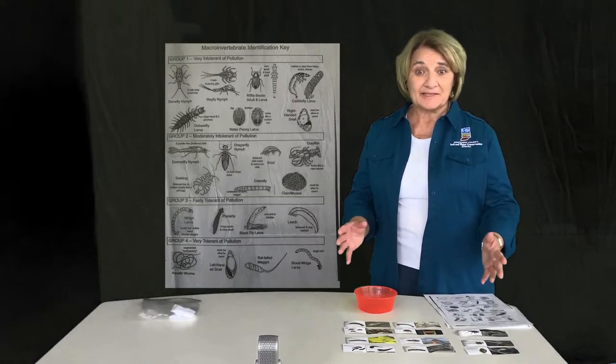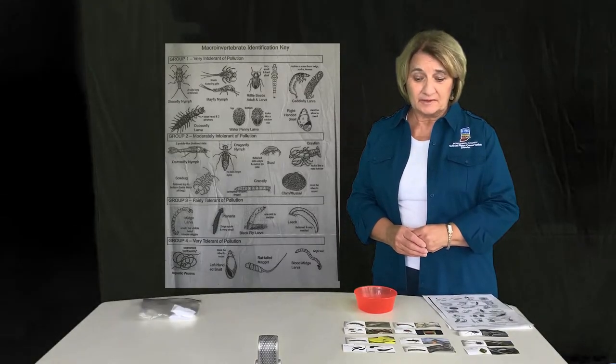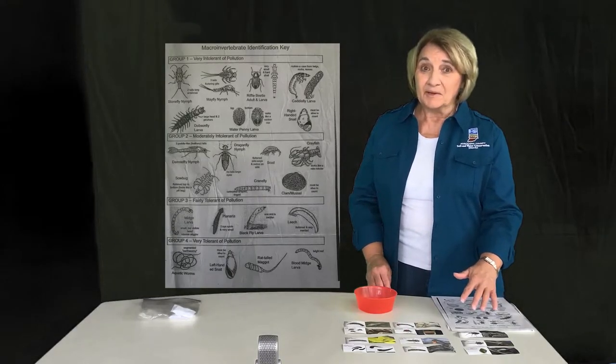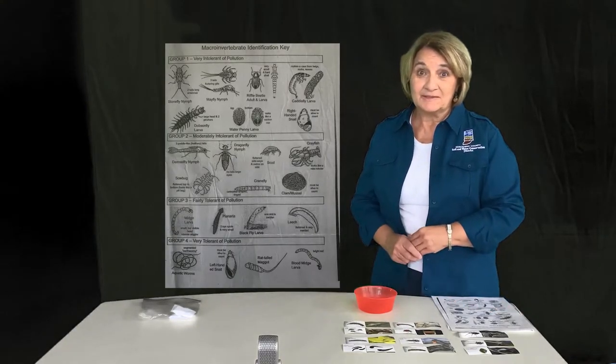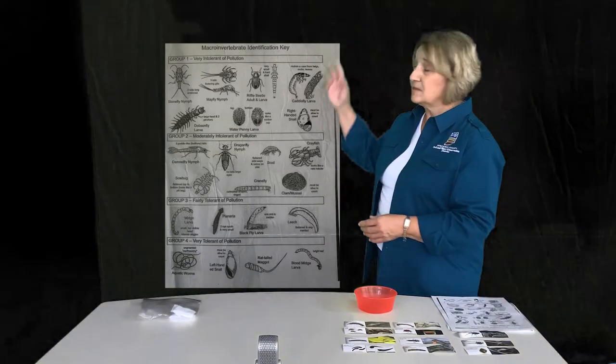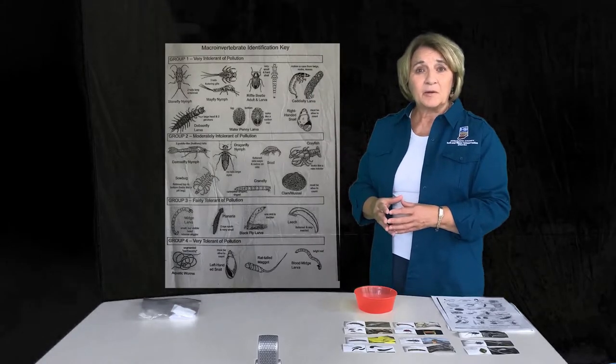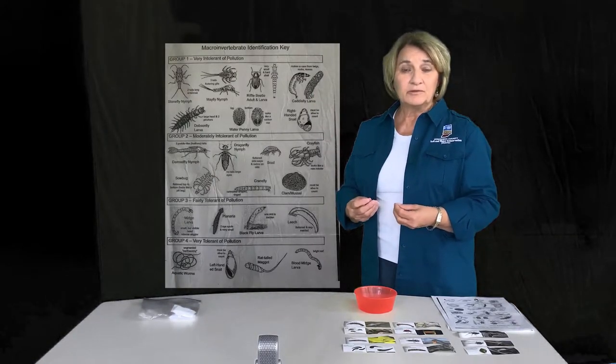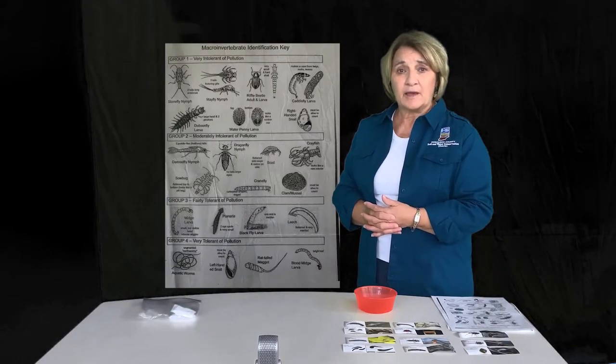So we pulled our insects out and sorted them into groups. This is what we pulled out of our sampling bag. Ironically, we have one of each of the insects that were in the bag. Now what do these tell us? We're going to use this poster up here to help us identify them and to understand what kind of pollution tolerance each of these insects have.